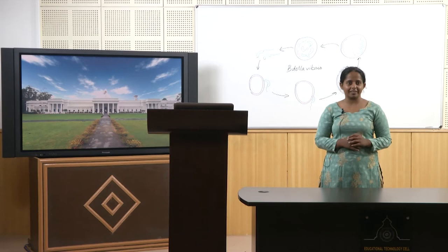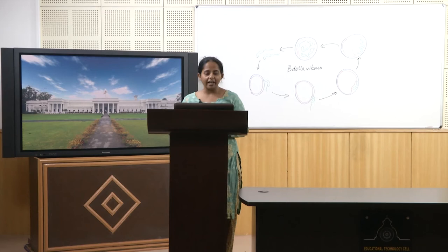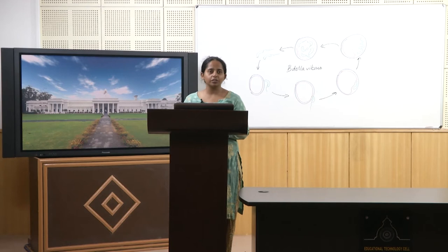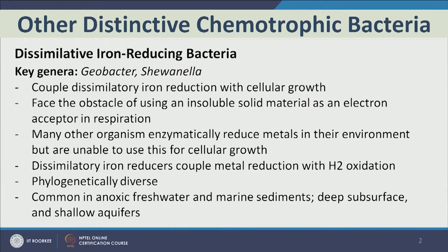Let us start with dissimilatory iron-reducing bacteria. Even though it says iron-reducing bacteria, the important thing to note is that this belongs to a class of bacteria that reduce metals or metalloids. Microbes that can reduce a certain metal can also reduce other metals, so this is not very specific generally only to iron reduction. This is one of the challenges in designing a biomarker for iron-reducing bacteria, as they do not have very specific enzymes — most can also reduce other similar metals or metalloids. The word dissimilatory implies that once iron is reduced, it is not incorporated in the cell body of the microbe.